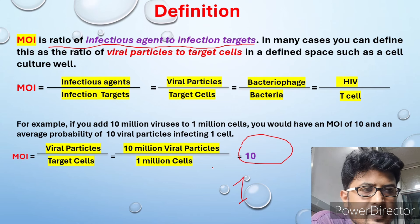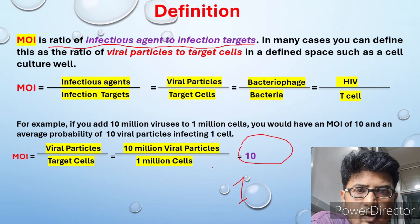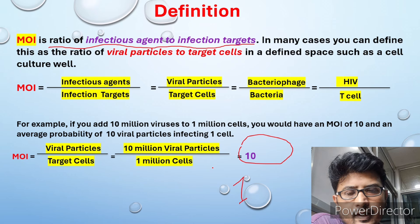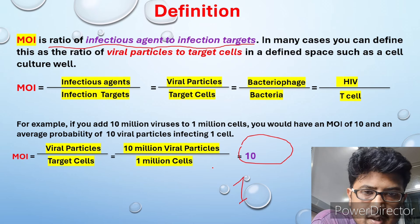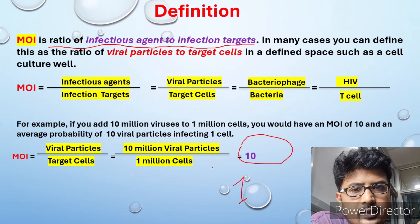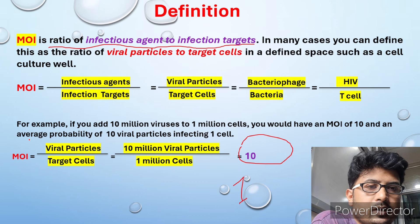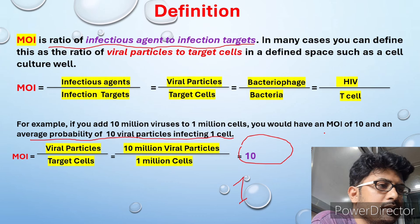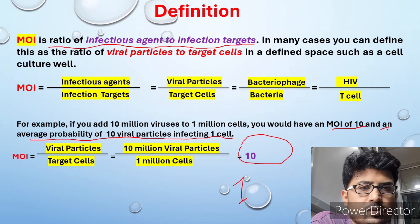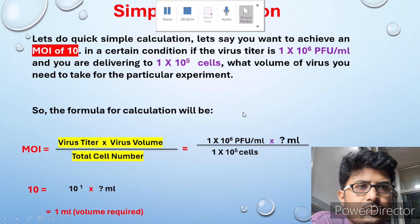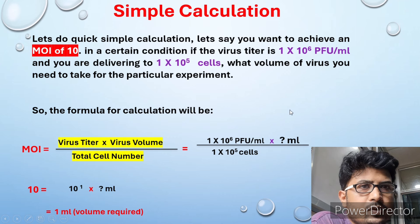Theoretically, at MOI 1 one virus is infecting one cell. In the case of MOI 10, ten viruses are infecting one particular cell — so per cell, according to theory, you are applying 10 viral particles against one cell. This is a very important concept.